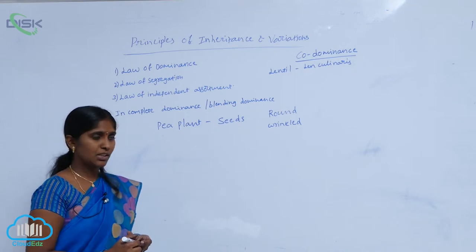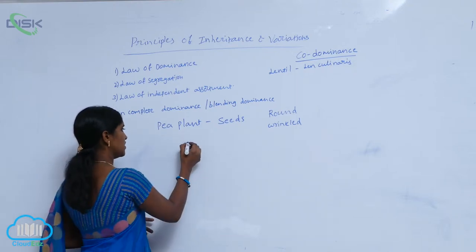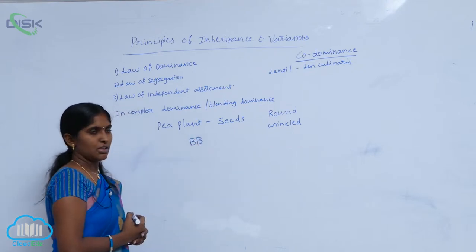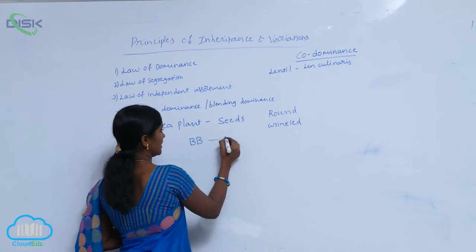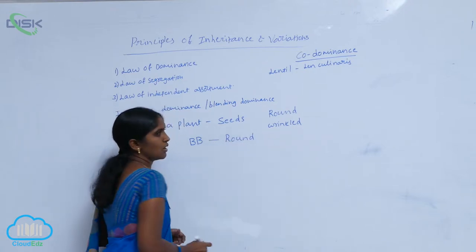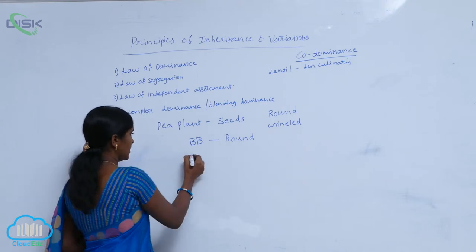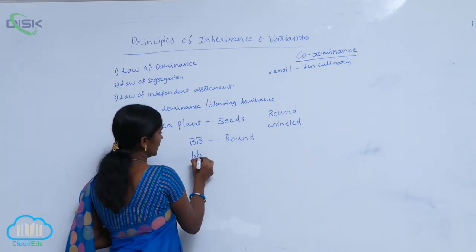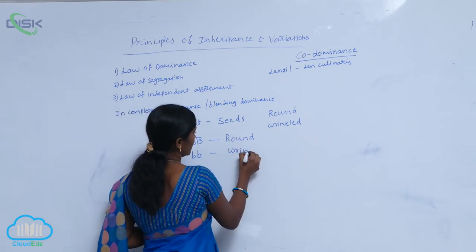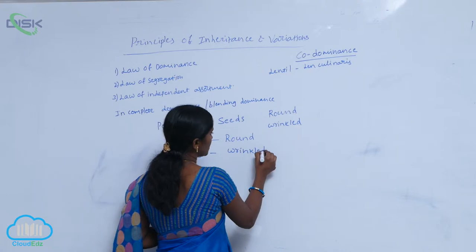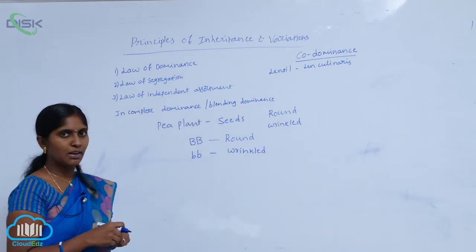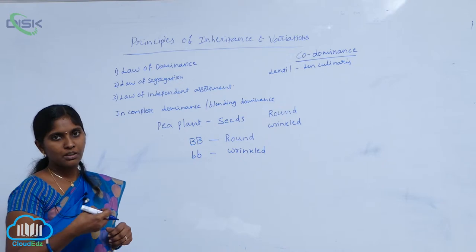How they differ depends on two types of genotypes. If the genotype is capital B capital B, that is represented as round - the seed shape is round. When it is small b small b, that is the recessive character, the seed is wrinkled. So two shapes of seeds are produced in the pea plant according to genotype.